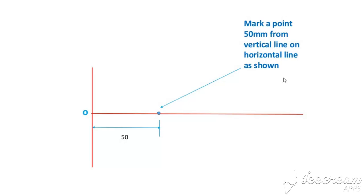Mark a point 50mm from the vertical line on the horizontal line as shown, which is the distance of the directrix from the focus. It is 50mm. Name the point as F, which is your focus.